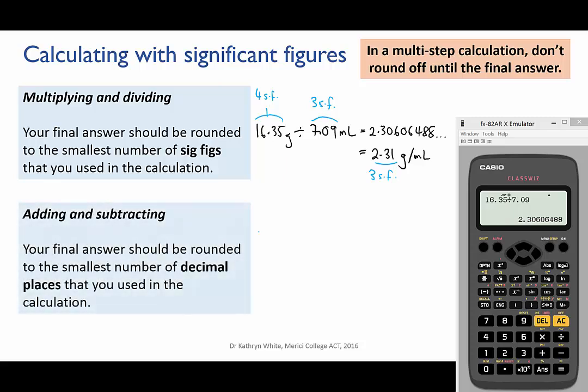Now when you're adding and subtracting, the rule is slightly different. Rather than looking for the number with the fewest sig figs, you're looking for the number with the fewest decimal places. For instance,